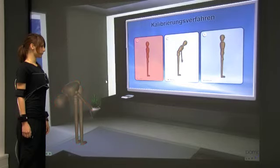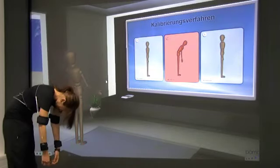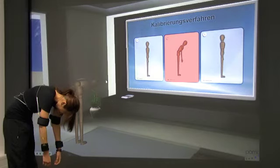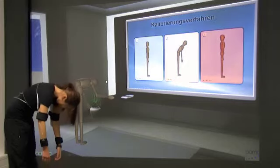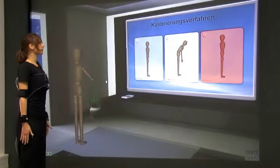To calibrate, the monitored subject first stands upright, then bends forward, which makes the torso correctly aligned. The next step is to make the arms follow the subject's movements. For this, stand upright again, with the arms straight down and the thumbs forward.